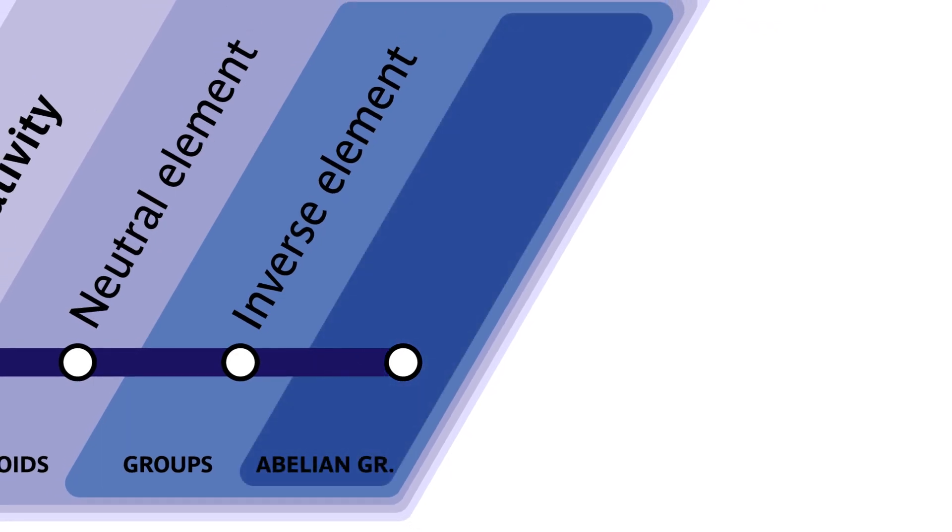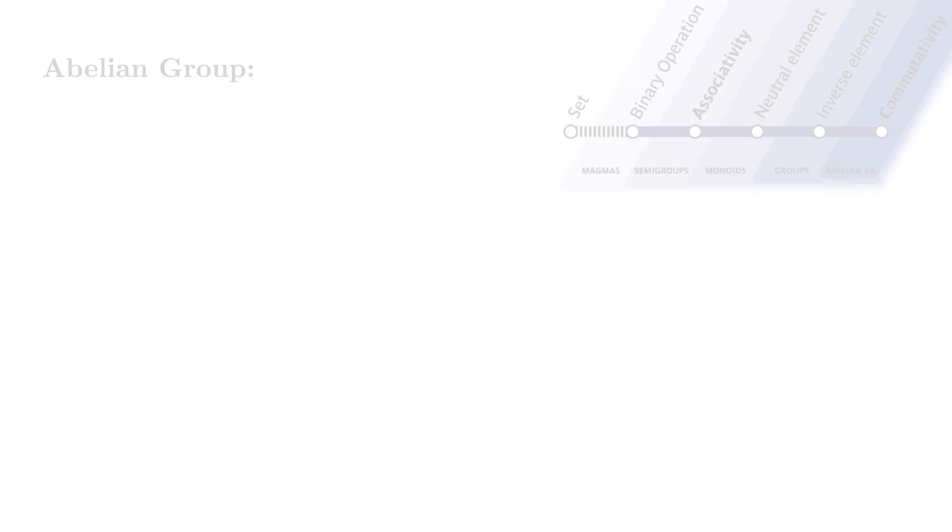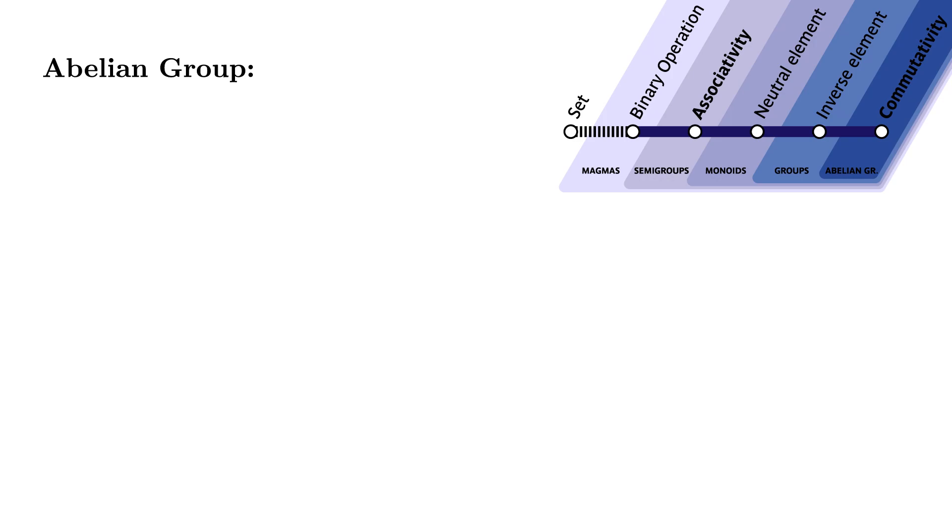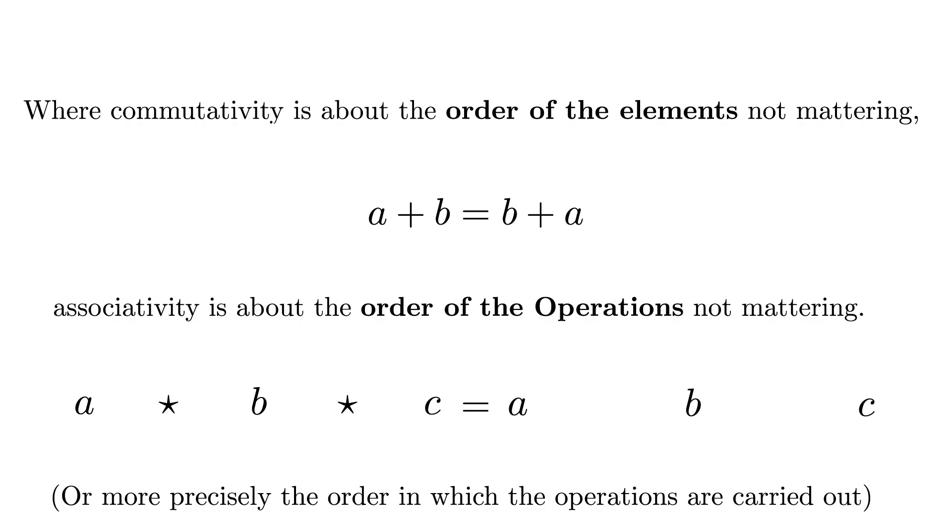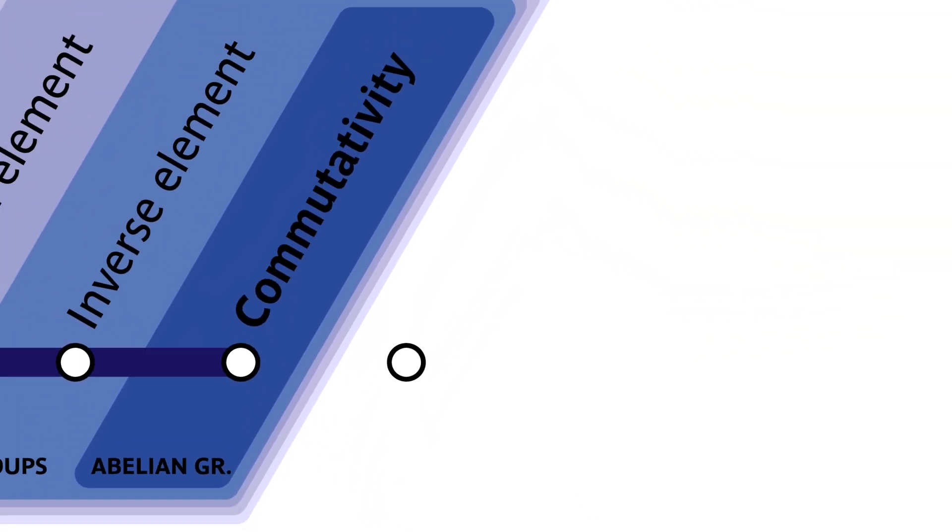Now, the last station of this line: commutativity. Here, it doesn't matter in which order you make the elements interact with each other. For all elements A, B in our set, A plus B equals B plus A. Where commutativity is about the order of the elements not mattering, associativity is about the order of the operations not mattering, or more precisely, the order in which the operations are carried out.